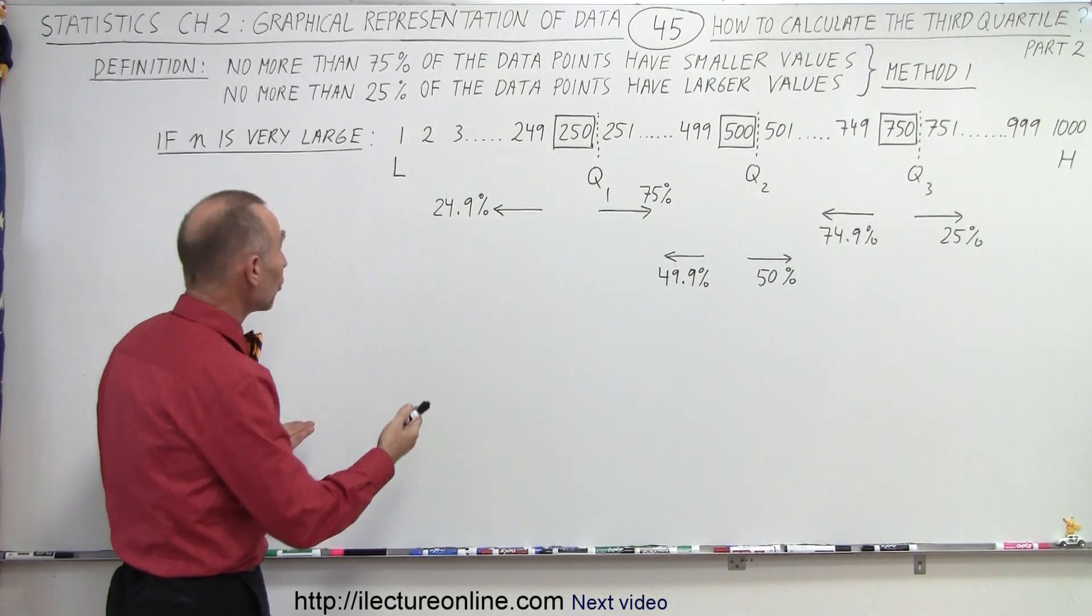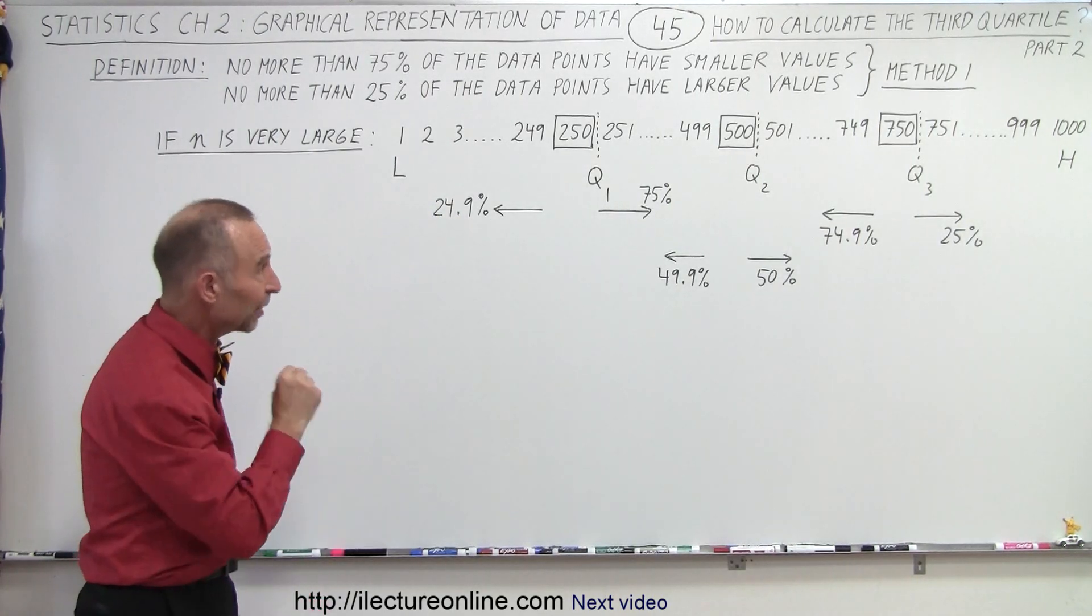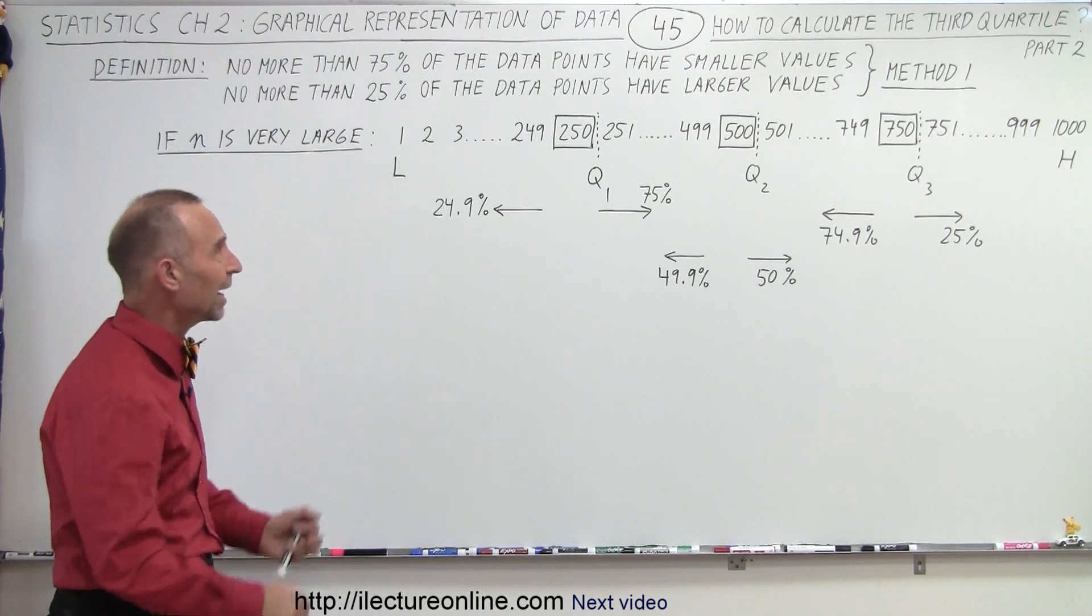The dataset we chose was 1,000 points from 1 to 1,000. It turns out that the position of each data point is also equal to the value of each data point, which makes it easier to look at.